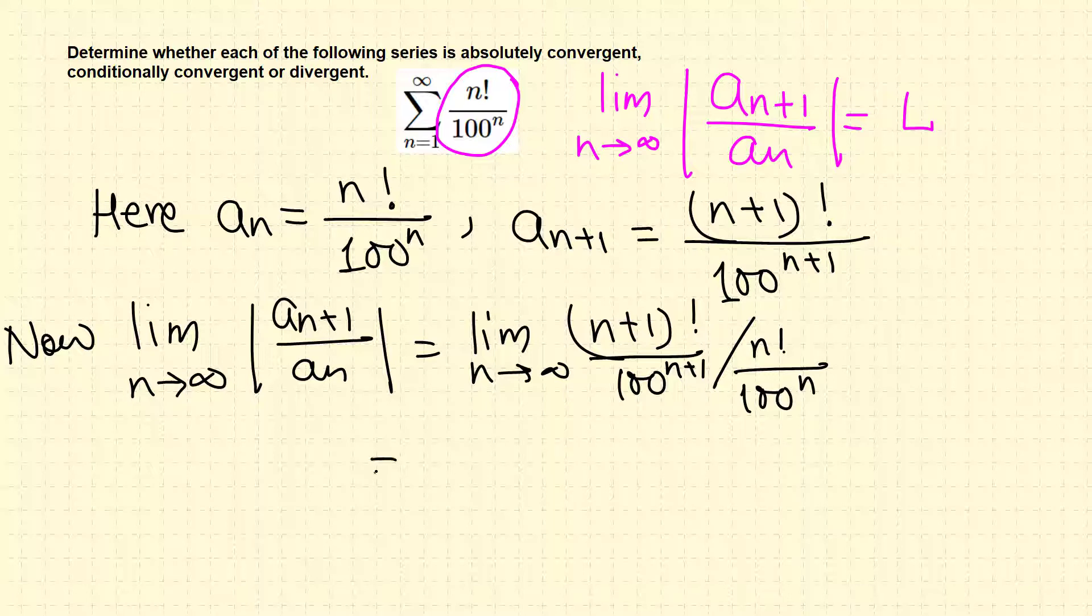Now we want to simplify this. The limit as n goes to infinity—when we divide, we change this division into multiplication, which flips.